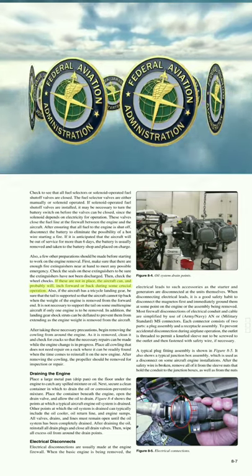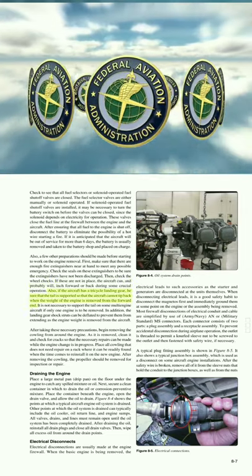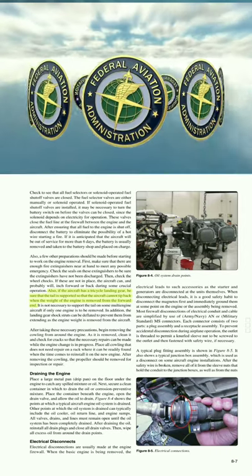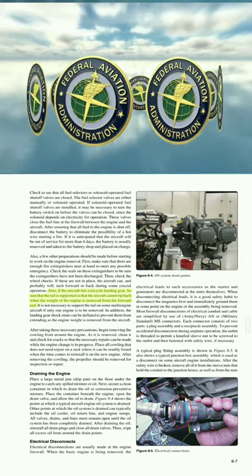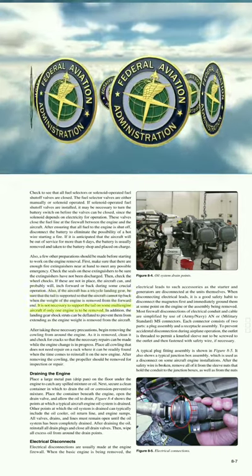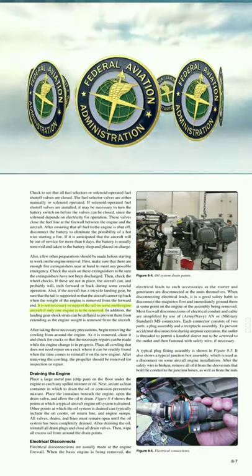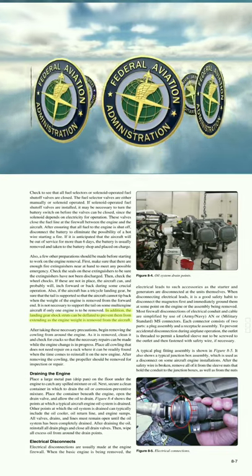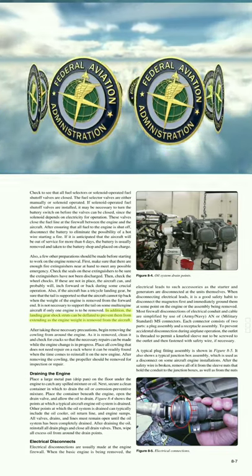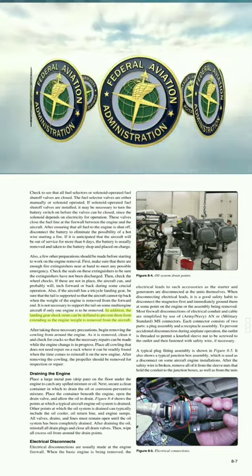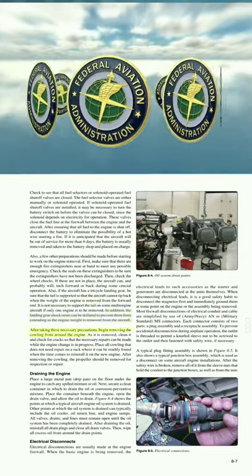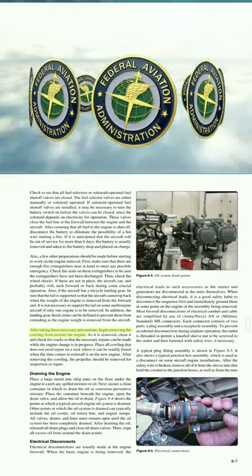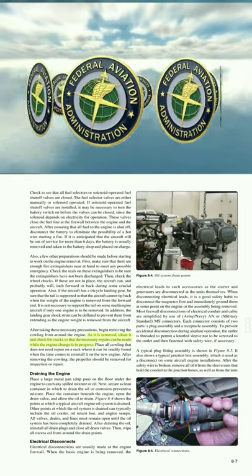Check the wheel chocks — if these are not in place, the aircraft can inch forward or back during some crucial operation. Also, if the aircraft has a tricycle landing gear, be sure that the tail is supported so the aircraft cannot tip back when the weight of the engine is removed from the forward end. It is not necessary to support the tail on some multi-engine aircraft if only one engine is to be removed. The landing gear shock struts can be deflated to prevent them from extending as the engine weight is removed.